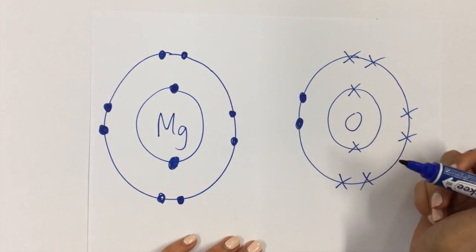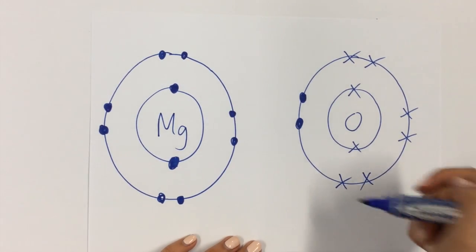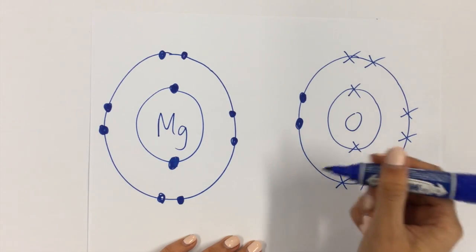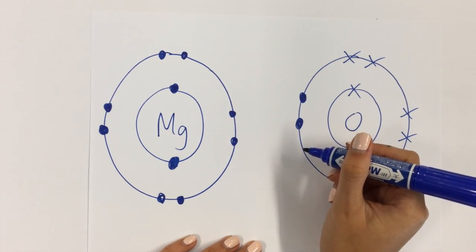Again, the question is, what holds these together? They've got full outer shells. Why are they bonded together now? Why do they stick together? The reason is that they're now ions.